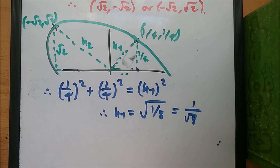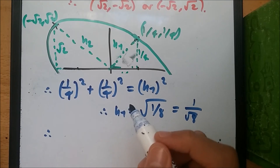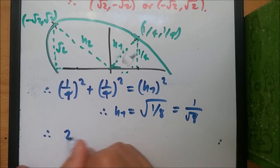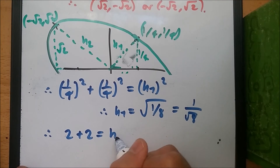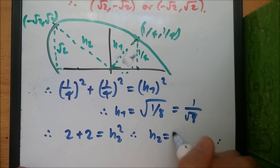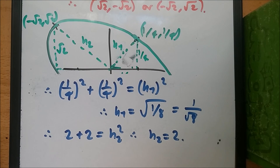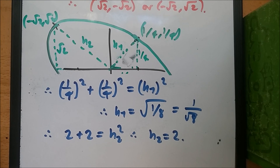For h2, the sides are both √2, so h2 squared equals (√2)² plus (√2)² equals 2 plus 2 equals 4, meaning h2 equals 2. So the shortest distance from the origin is 1/√8 and the longest distance is 2. I hope this video helps — if there are any problems with the calculations, feel free to let me know.